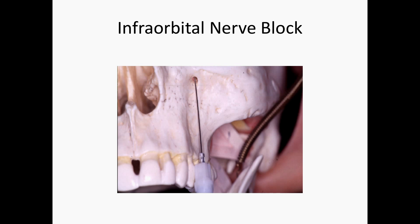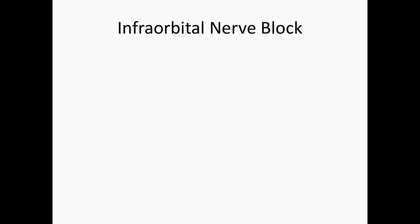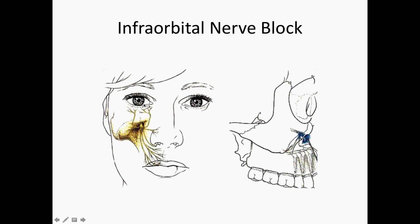The anatomical landmark you are looking for is the infraorbital foramen at the infraorbital notch. This landmark can usually be palpated. In cases of significant swelling, you can line up with the patient's pupil when looking straight ahead. As you can see in this image, the medial aspect of the patient's pupil lines up pretty perfectly with the infraorbital notch.